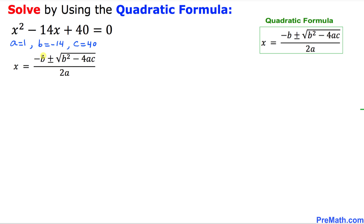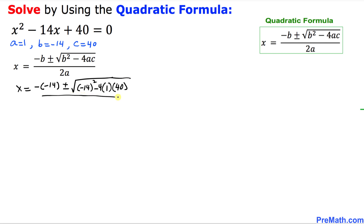Here is our quadratic formula and we are going to fill in the blanks. So x is going to be negative b — and b is negative 14 — plus or minus the square root of negative 14 squared minus 4 times a, which is 1, times c, which is 40, everything divided by 2 times 1. Simplifying: negative and negative become positive 14, plus or minus the square root of 196 minus 160, divided by 2.